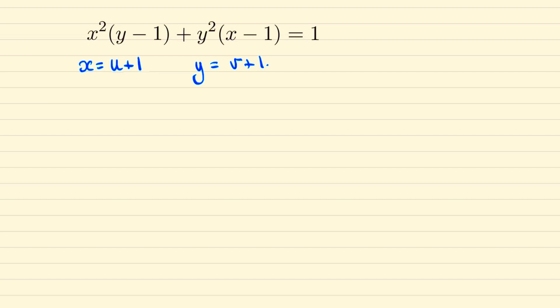We'll begin this problem by making the substitution x equals u plus one and y equals v plus one, so that now we can write the following equation. If we expand this then we find this becomes u squared v plus two u v plus v plus v squared u plus two v u plus u equals one.